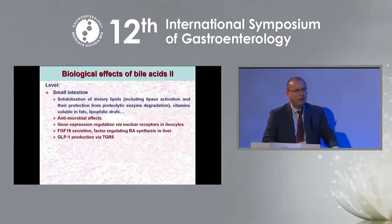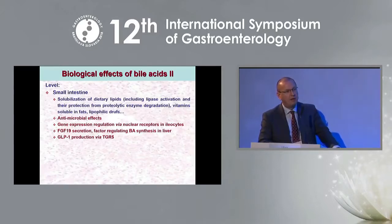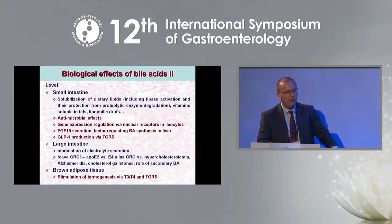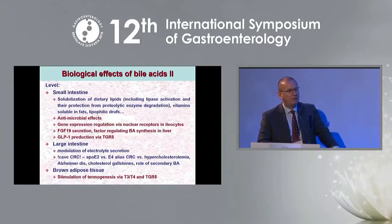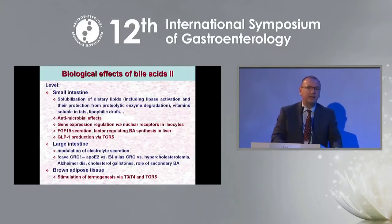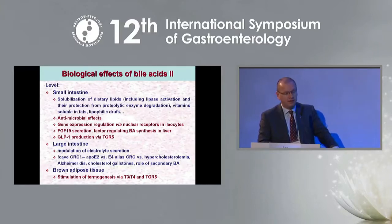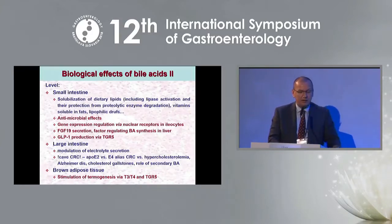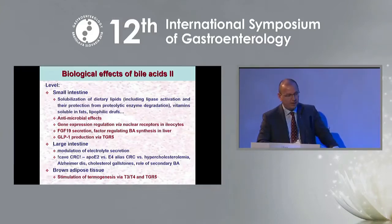Bile acids are responsible for glucagon-like peptide 1 production via the TGR5 receptor in the intestine. On the level of the large intestine, they modulate electrolyte secretion. However, they can also have deleterious effects. People with low LDL cholesterol levels have low risk of atherosclerosis, but they have higher biliary secretion of bile acids, higher production of secondary bile acids in the gut lumen, and therefore higher risk of colon cancer, cholesterol gallstone disease, and others. Bile acids can also act on brown adipose tissue, stimulating thermogenesis via thyroid hormone receptors and TGR5.